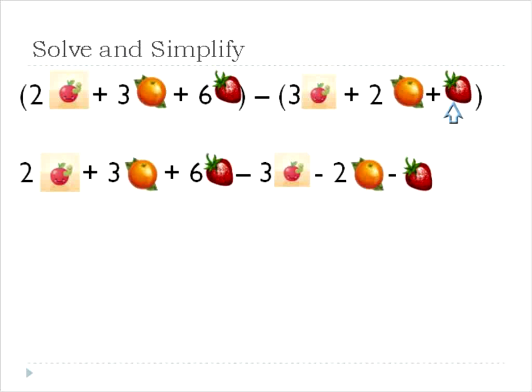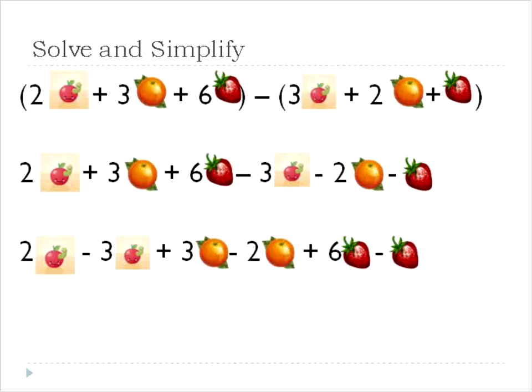So that's all that's changed in the second line. And in the third line what I've done is I've joined together like terms, so I'll have all of my apples over here, and then my oranges follow, and my strawberries last.